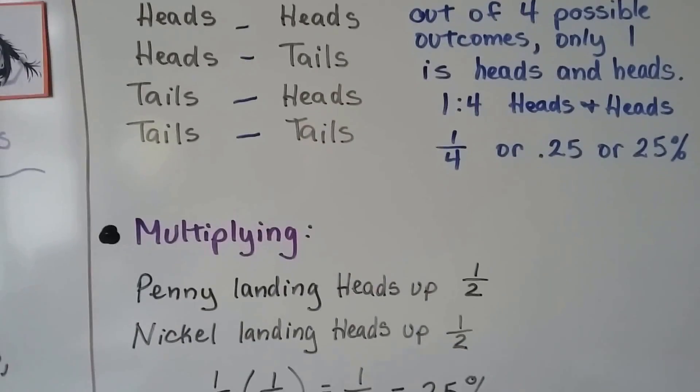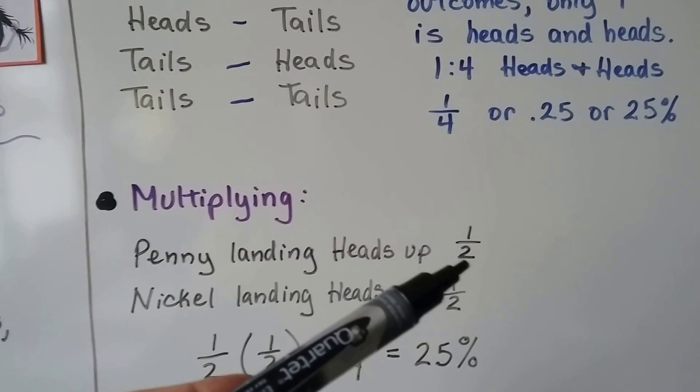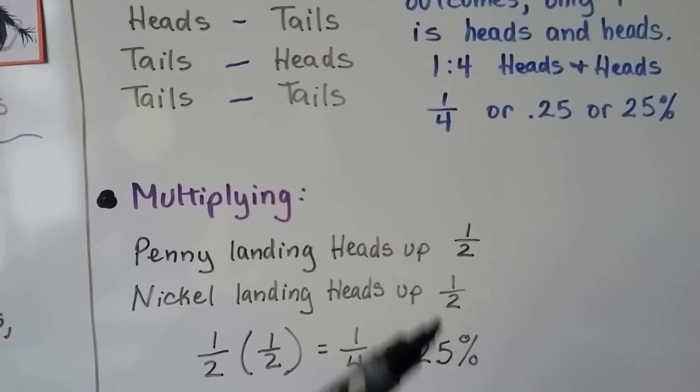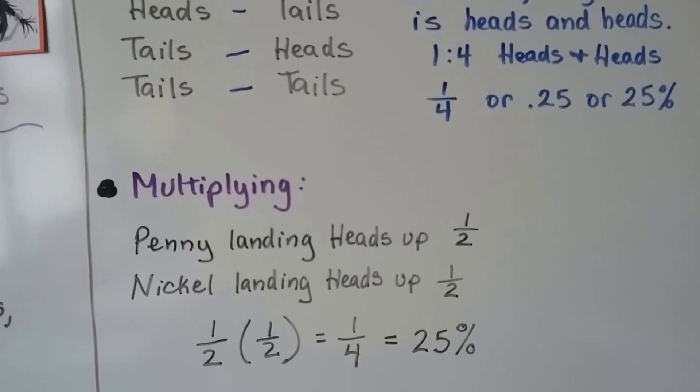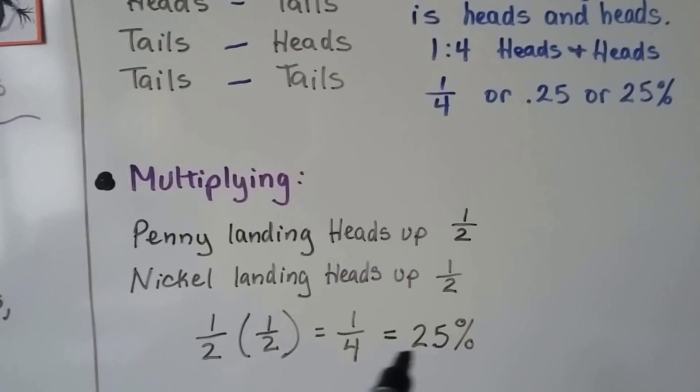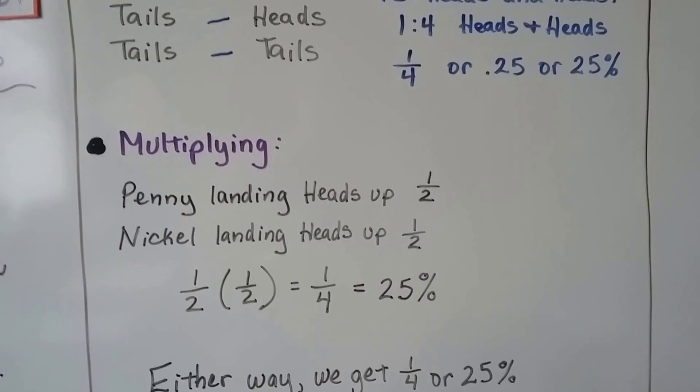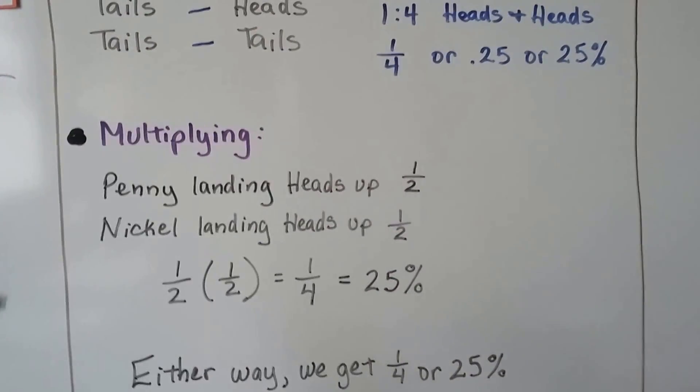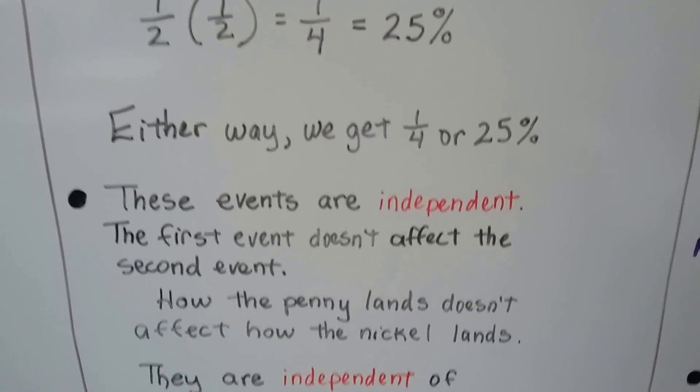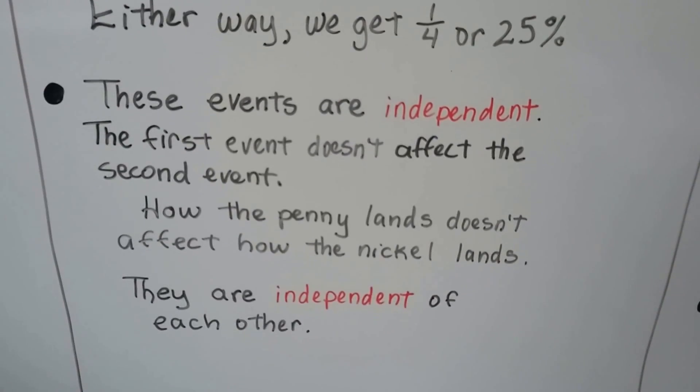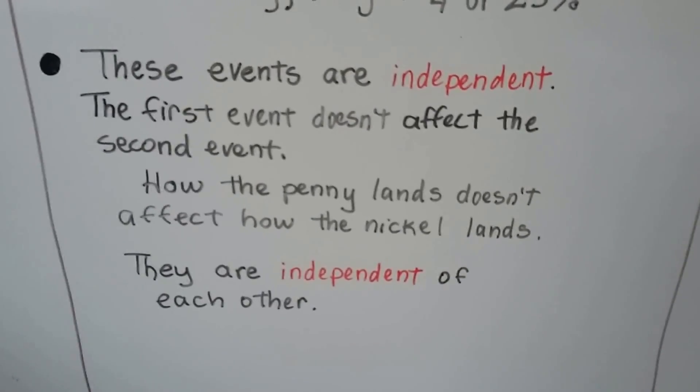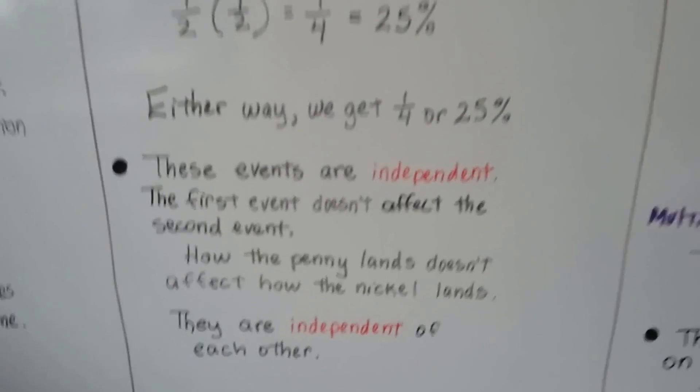When we multiply them, a penny has one head and there's two sides, so we have a half of a chance of it being a head. And a nickel has one head for two sides, so we have a half of a chance of it being a head. We can multiply the half times the half and get one-fourth, 25%. So either way, we get one-fourth or 25%, whether we made the organized list, that chart, or we multiplied them. And these events are independent of each other. The first event doesn't affect the second event. How the penny lands does not affect how the nickel lands. They're independent of each other. Two separate simple events.